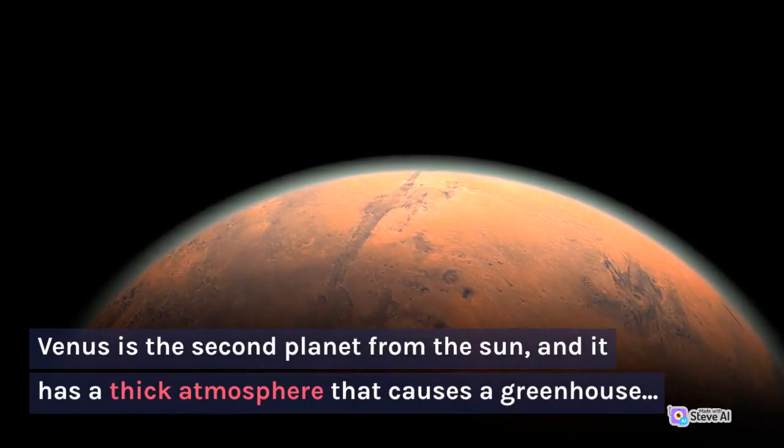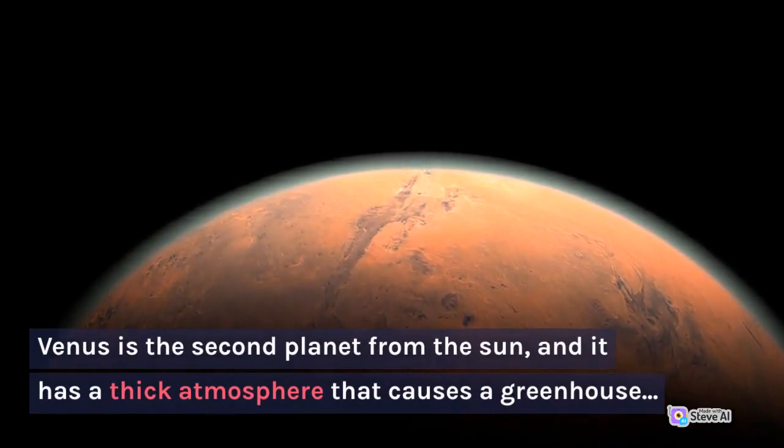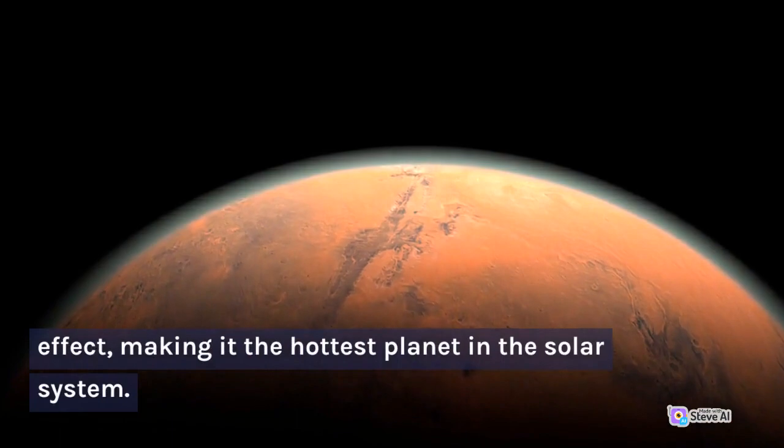Venus is the second planet from the sun and it has a thick atmosphere that causes a greenhouse effect, making it the hottest planet in the solar system.